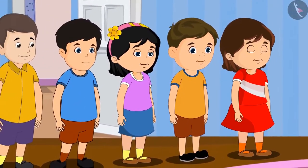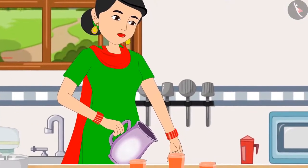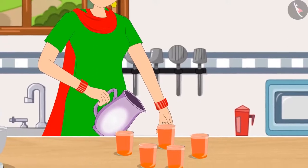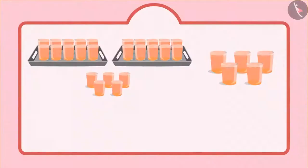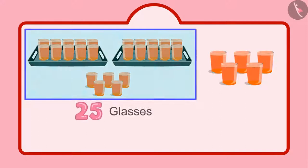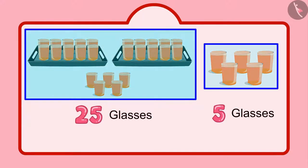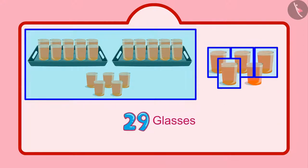After some time, some more friends of Chotu came home, and Chotu's mother made more sherbet for them. Let's see how many glasses of sherbet were made. Chotu distributed a total of 25 glasses of sherbet and after that 5 more glasses. So that makes it 26, 27, 28, 29, 30.